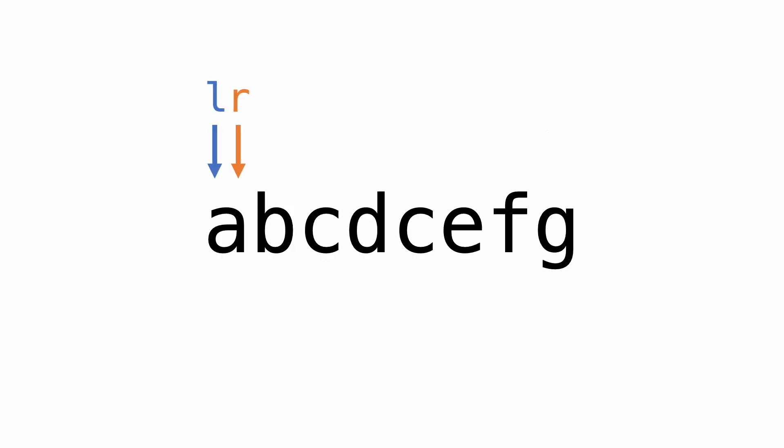So our algorithm will be, keep moving the right pointer to extend the substring until we reach a repeated character. At that point, move the left pointer up until the repeated character is gone, then we keep on repeating these steps until the right pointer reaches the end of the string. We only have to loop through the string once, so this algorithm runs in O of n time.